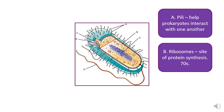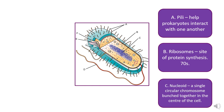We have ribosomes, shown as red dots within the cytoplasm. Their function is the same as in eukaryotic cells — they are the site of protein synthesis — however in prokaryotes the ribosomes are smaller. We say they are 70S, whereas in eukaryotes they are 80S. The smaller number means smaller in size. You must know this as a key difference between eukaryotes and prokaryotes.